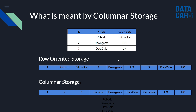Next, what is columnar storage? I have created a simple table with three columns and three records — ID, Name, and Address. In row-oriented storage, record one is stored as: ID=1, Name=Pubudu, Address=Sri Lanka; record two as: ID=2, Name=Devagama, Address=US. In columnar storage, all ID values are stored together (1, 2, 3), then all Name values, then all Address values.